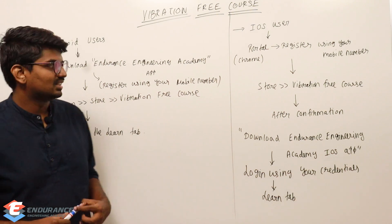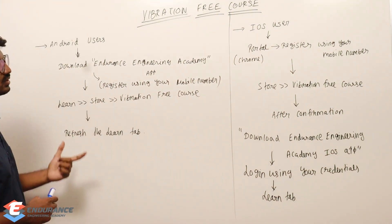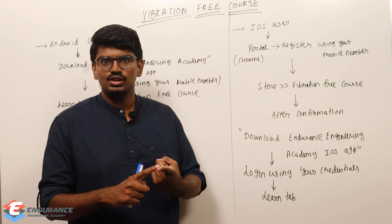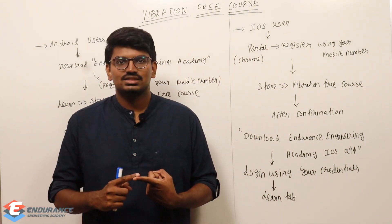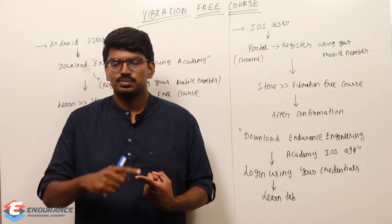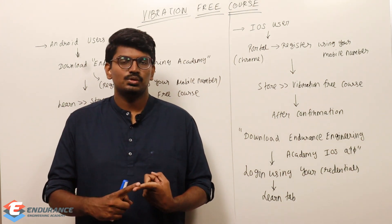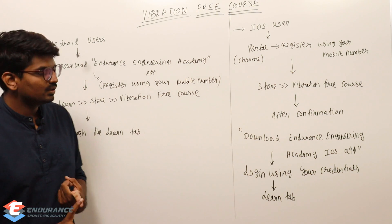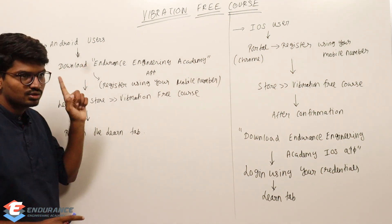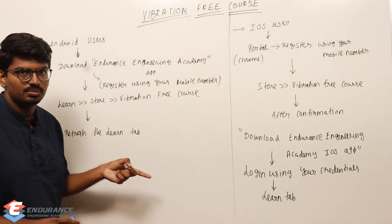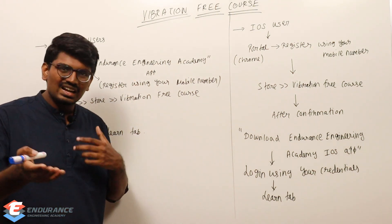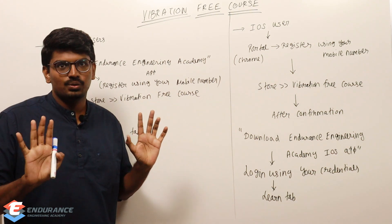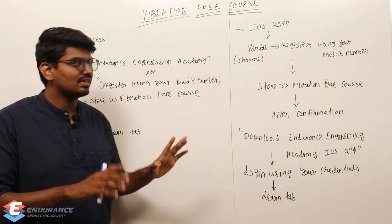So what is the process? Android users, if you are registering fresh - first thing, the free course is accessible only in the app. If you are using Android, you can go directly to Play Store and download the Endurance Engineering Academy app. There is a link in the description. Login using your mobile number. If you are already using our app, you will be able to go directly to the next step.